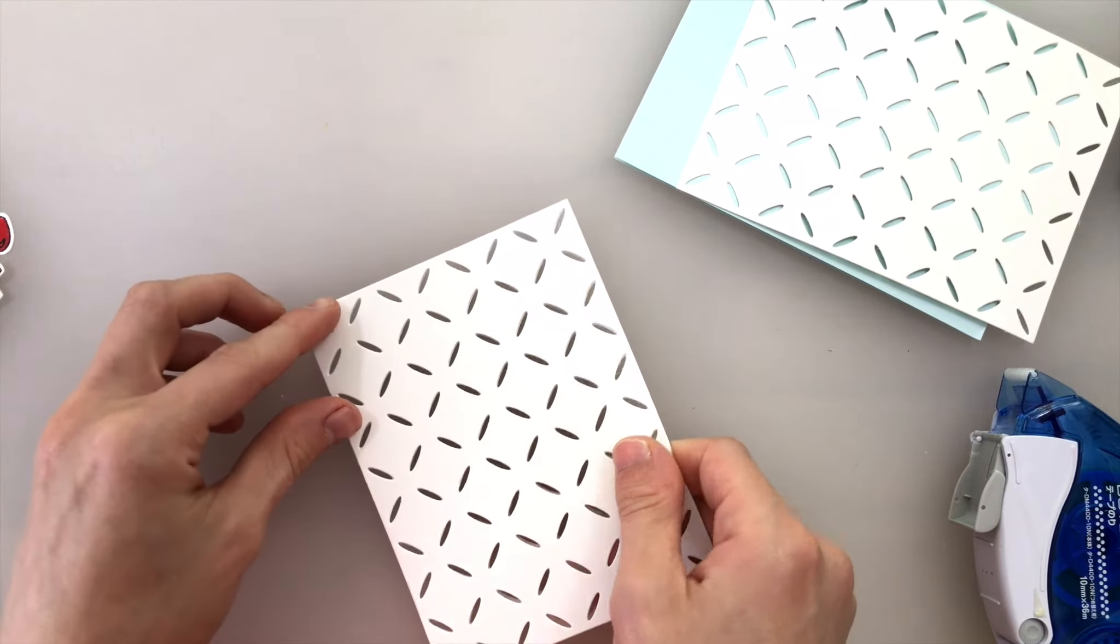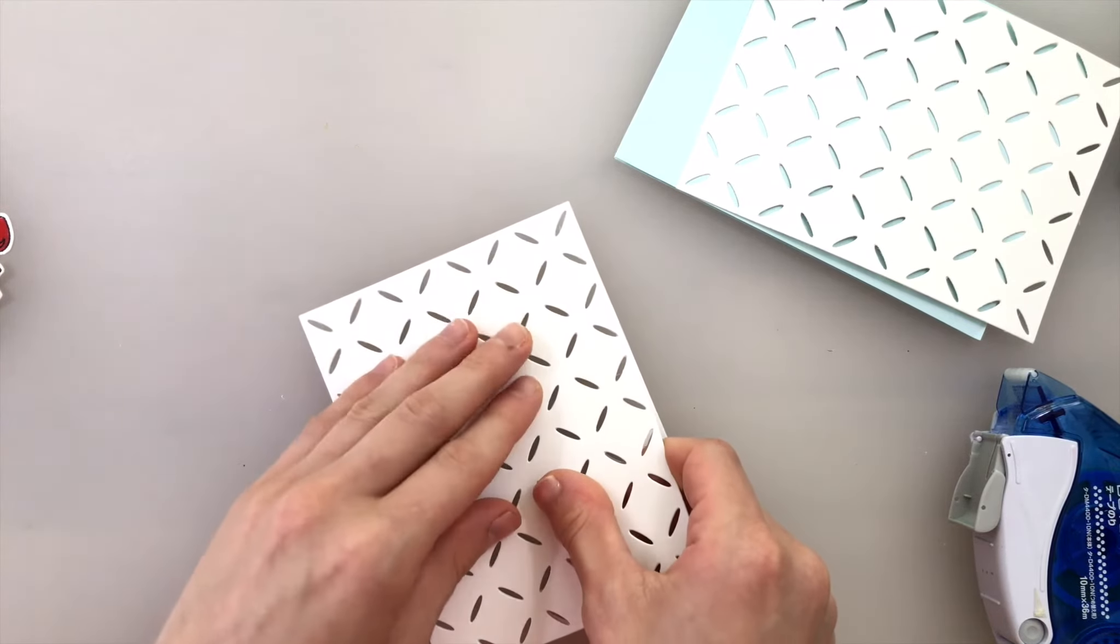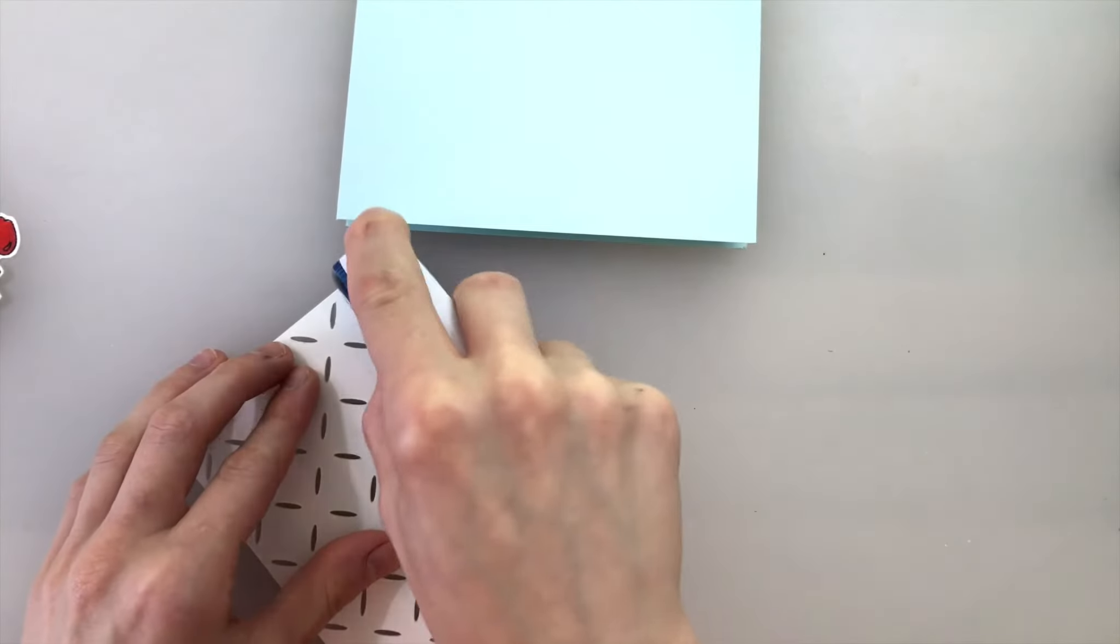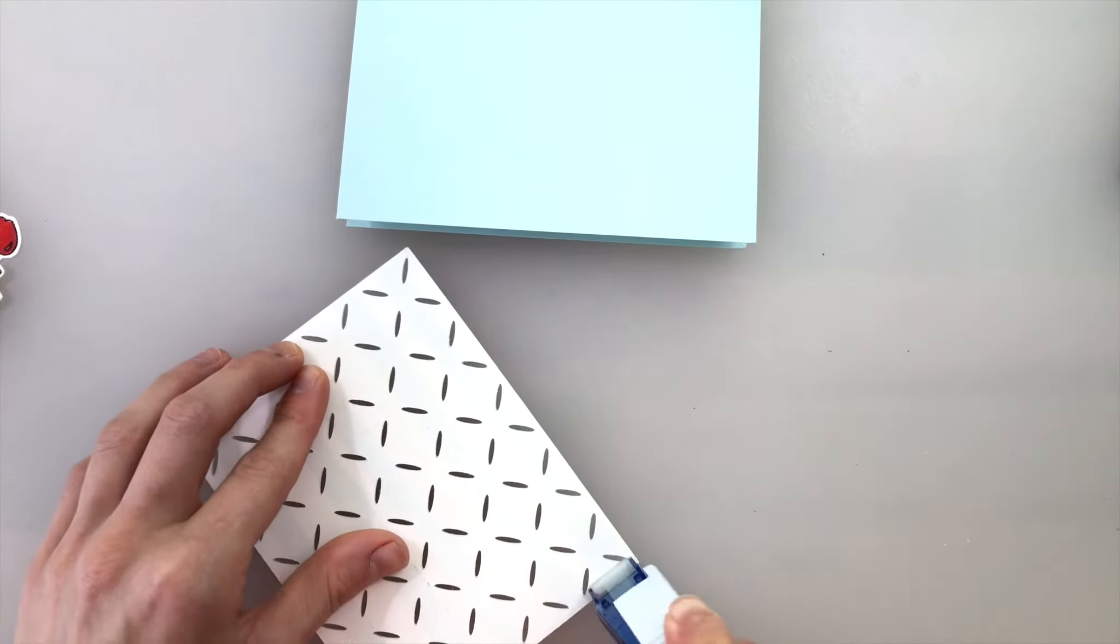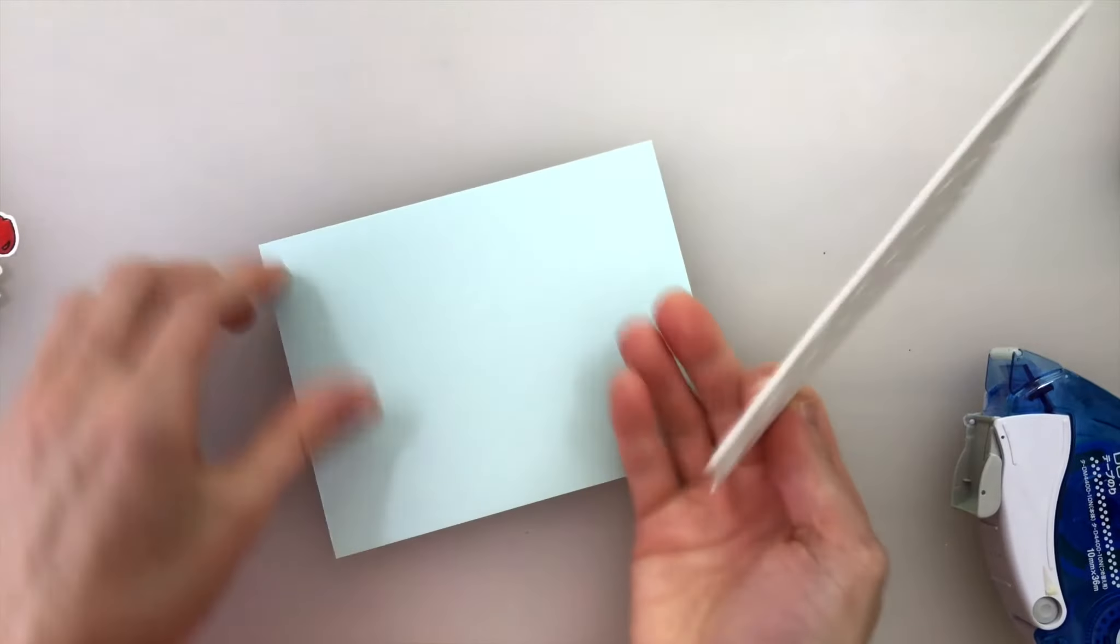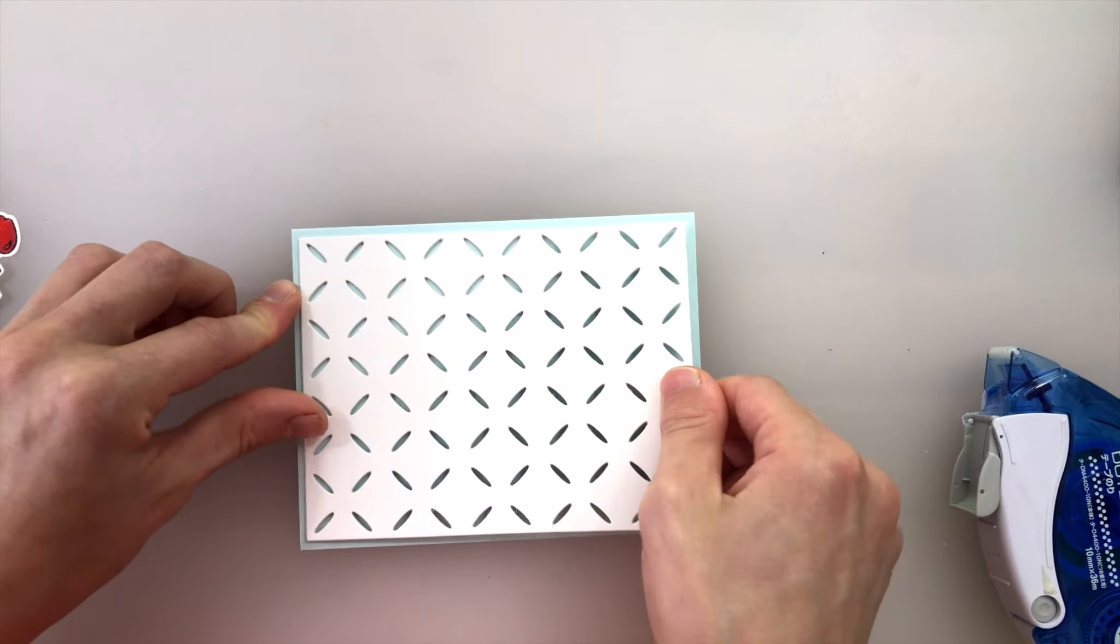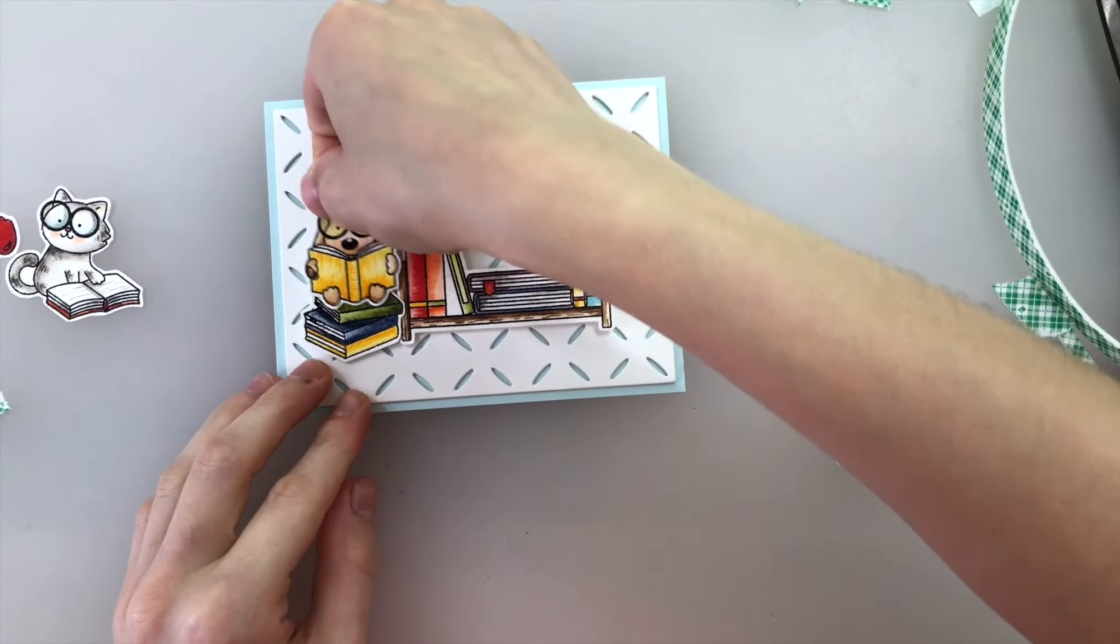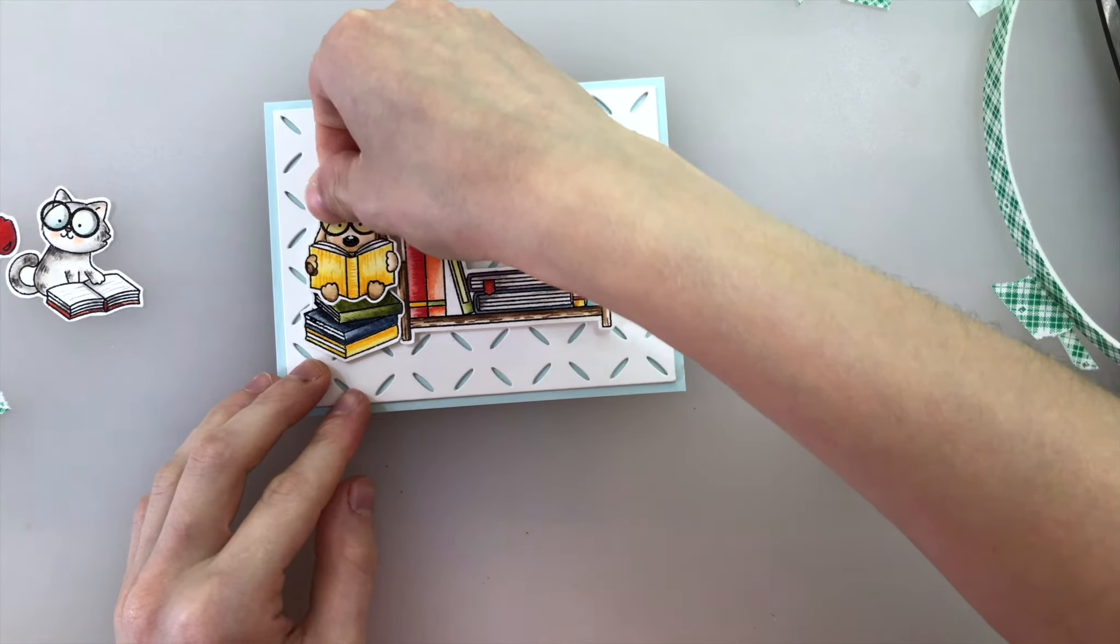Once all of my coloring was done I did cut my images out and now I'm working on building my card base. The card base is some sea glass cardstock from Simon Says Stamp and I've die cut our new diamond pattern background die three times from white cardstock and I stacked all three together to create a slightly dimensional piece that's going to sit on top of that sea glass card base.